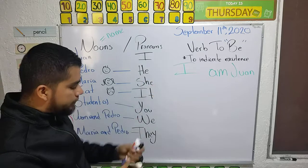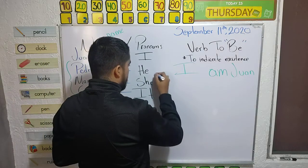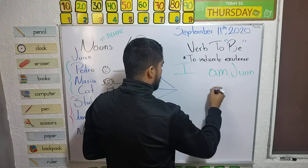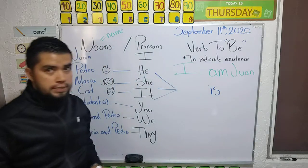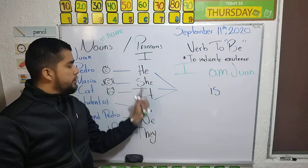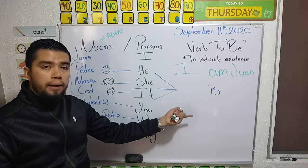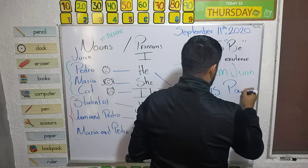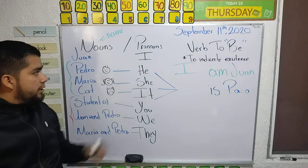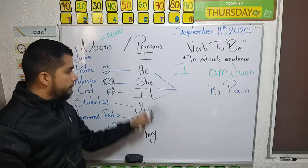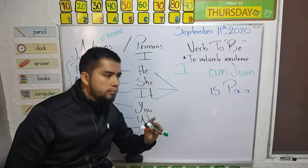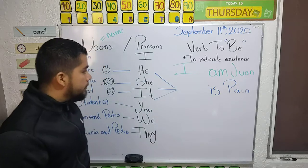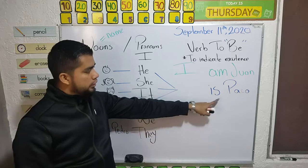Then, for 'he', 'she', and 'it', we are going to use 'is'. He is, she is, it is. For example: he is Paco — he exists, and he is Paco. Or she is Maria. It is Feralize. So 'he', 'she', and 'it' all use 'is'.